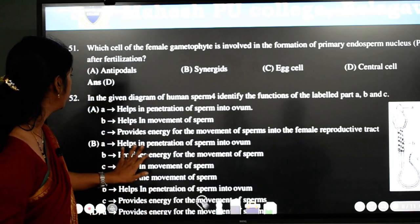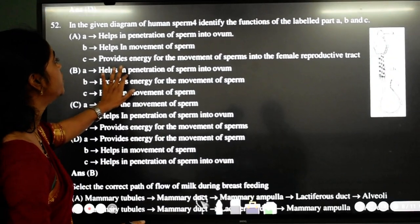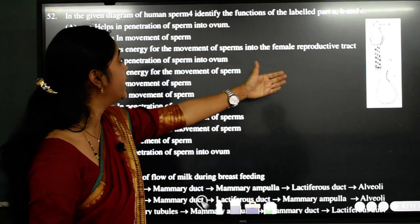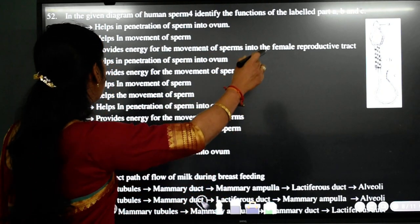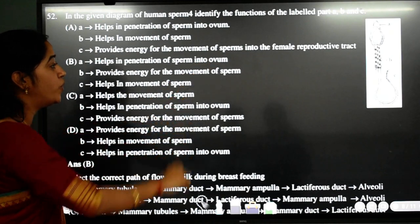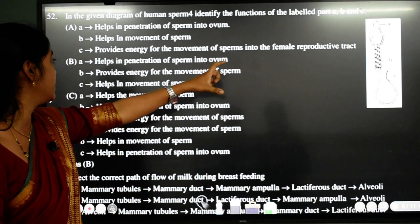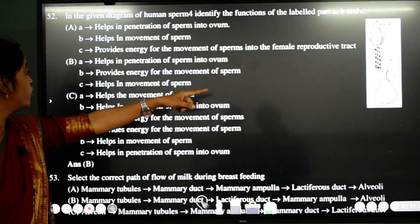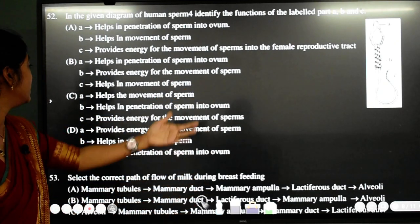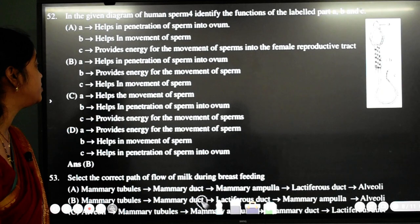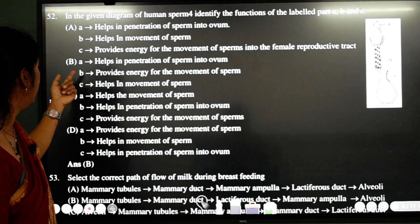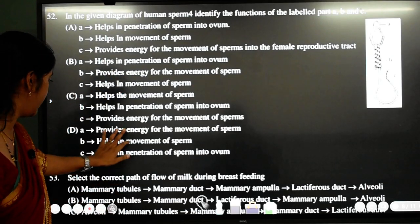52nd question. In the given diagram of human sperm, identify the functions of the label part A, B and C. Student, very simple thing. A is nothing but acrosome which helps in the penetration of the sperm into ovum. If you see the B, it's the neck part in which you will be having mitochondria. It provides energy for the movement of the sperm. And C is nothing but the tail part which helps in the movement of the sperm. So if you see the things, B is the answer.